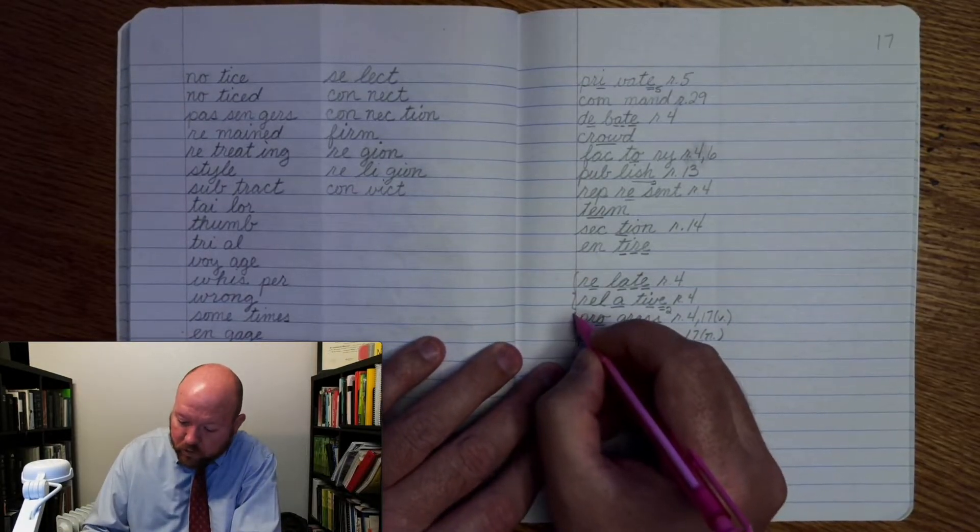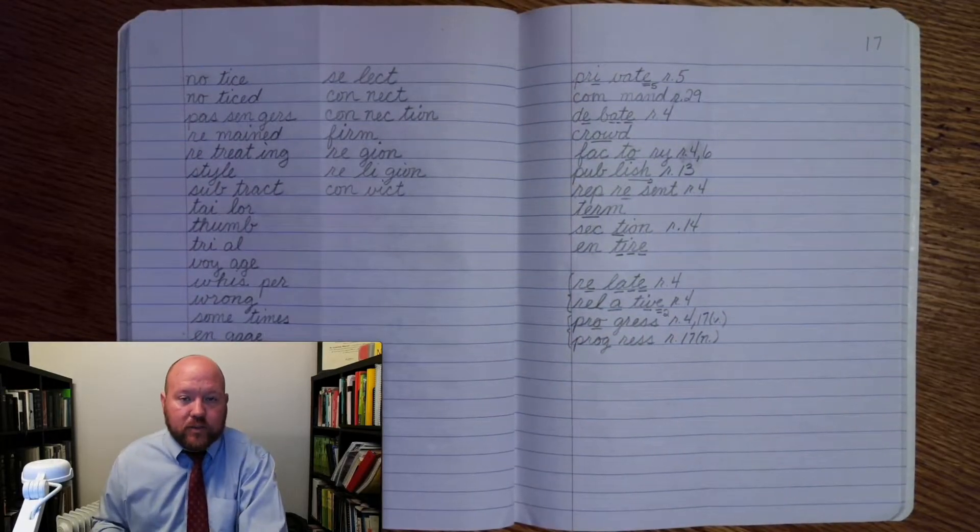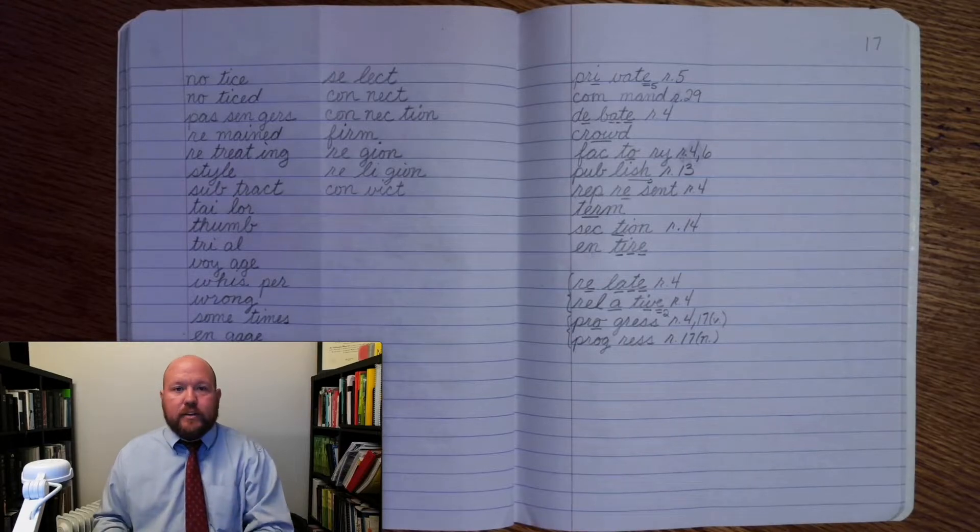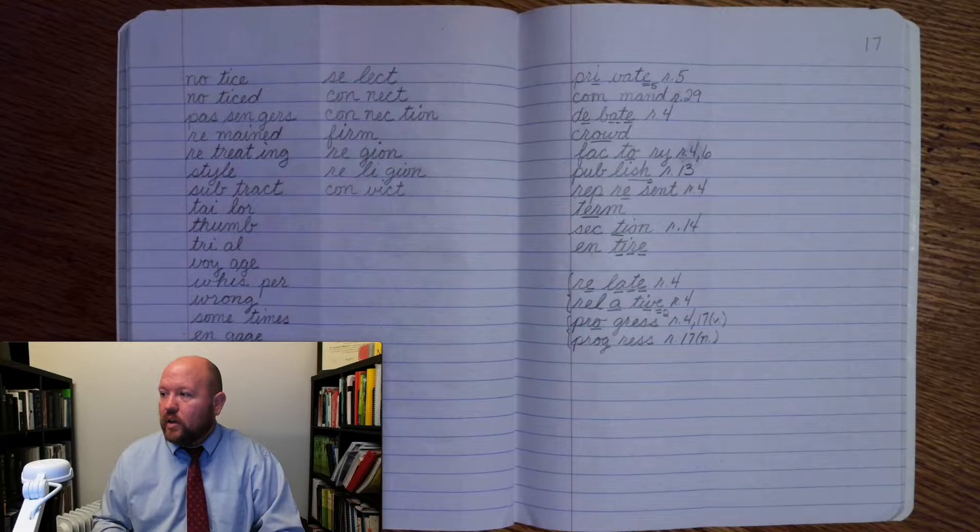Now, how do you know which one you're using? Well, you just have to know it in context. So when you're reading a story, if it's using it as a verb, then you would say progress. If it's using it as a noun, you'd say progress.